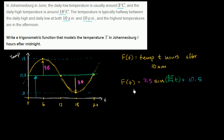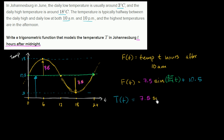But that's not what they wanted — they want us to model the temperature capital T, lowercase t hours after midnight. So what would T of t be? We're going to have to shift this a little bit. We'll have the same amplitude, so it's going to be 7.5 times sine of π over 12. Instead of just t, we're going to shift t either to the right or the left, adding or subtracting some value.